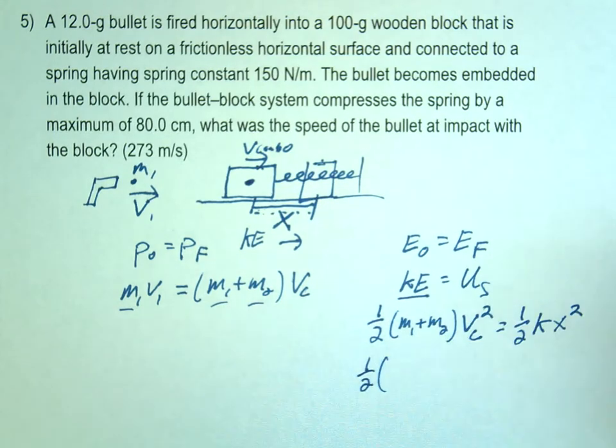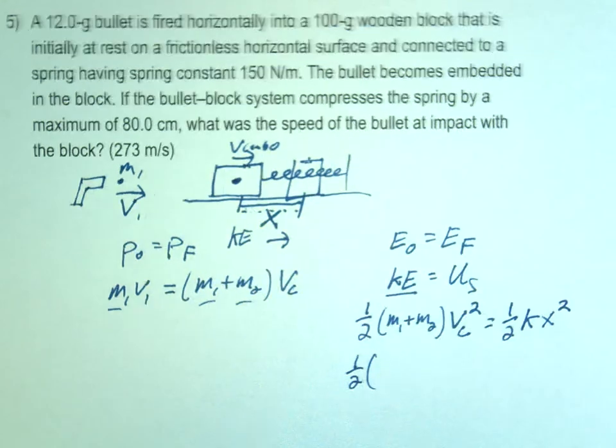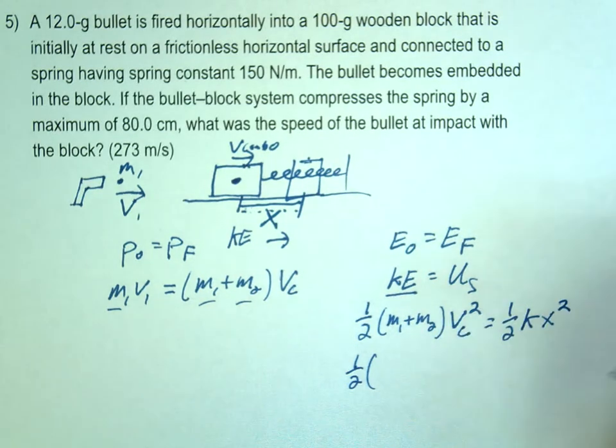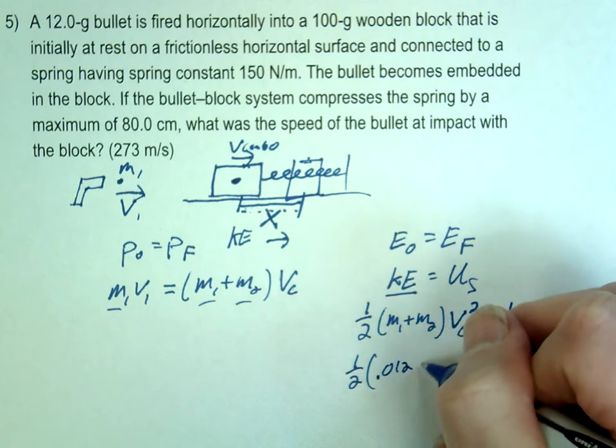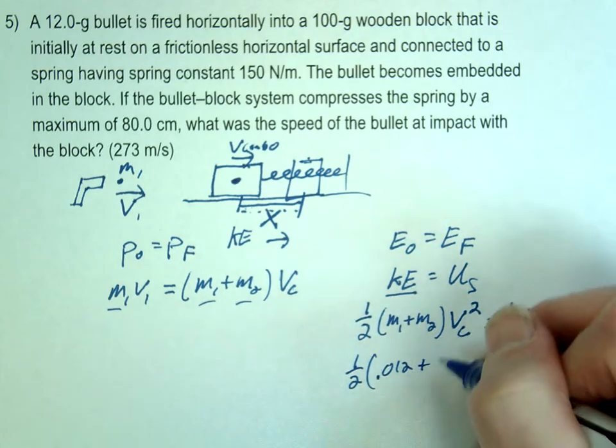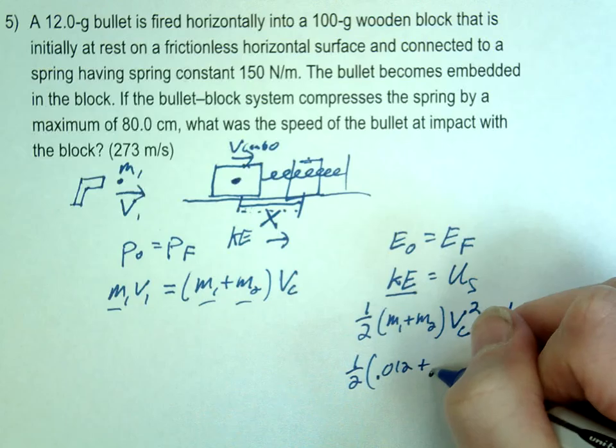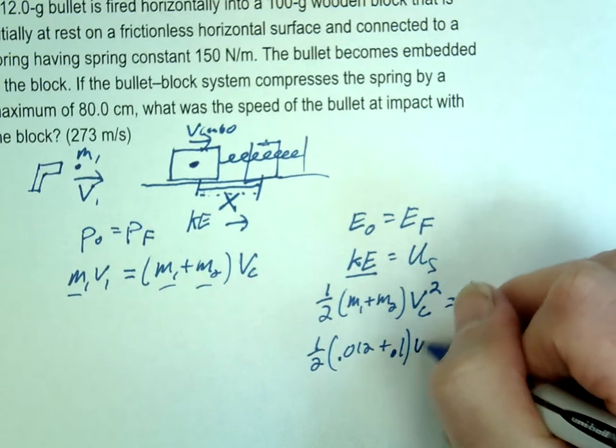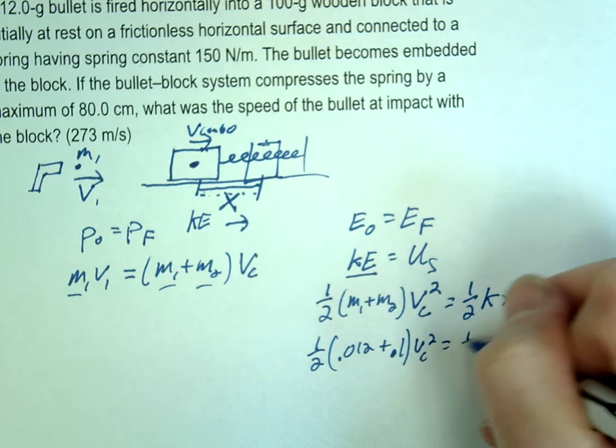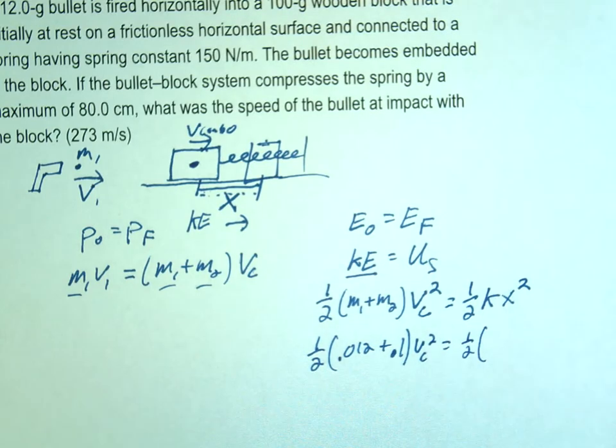You guys help me out with your calculators here. So 1 half, M1 was .012. M2, .1. Yeah, don't forget to convert. And then v combo is what we're looking for. K was given, right? 150.